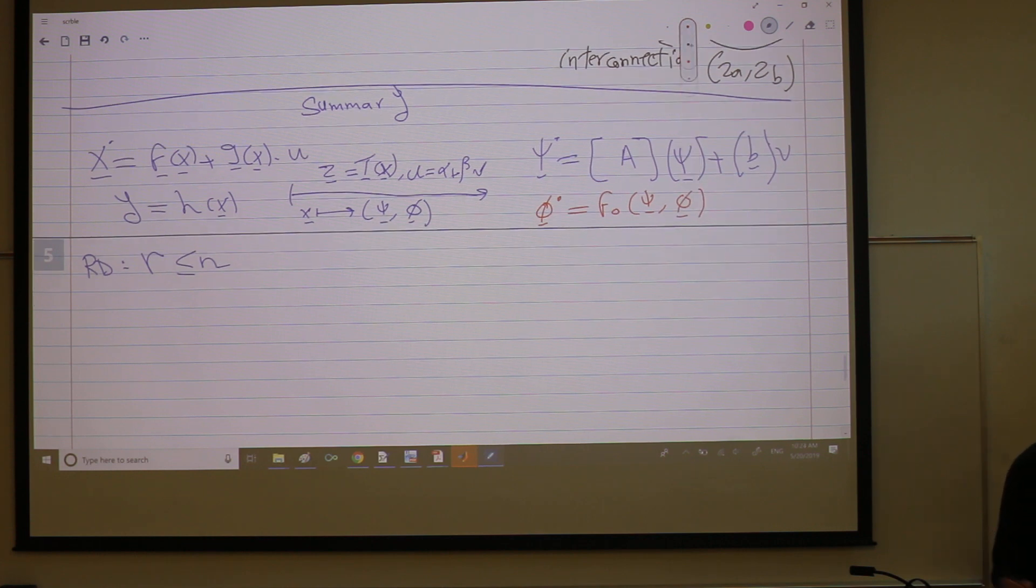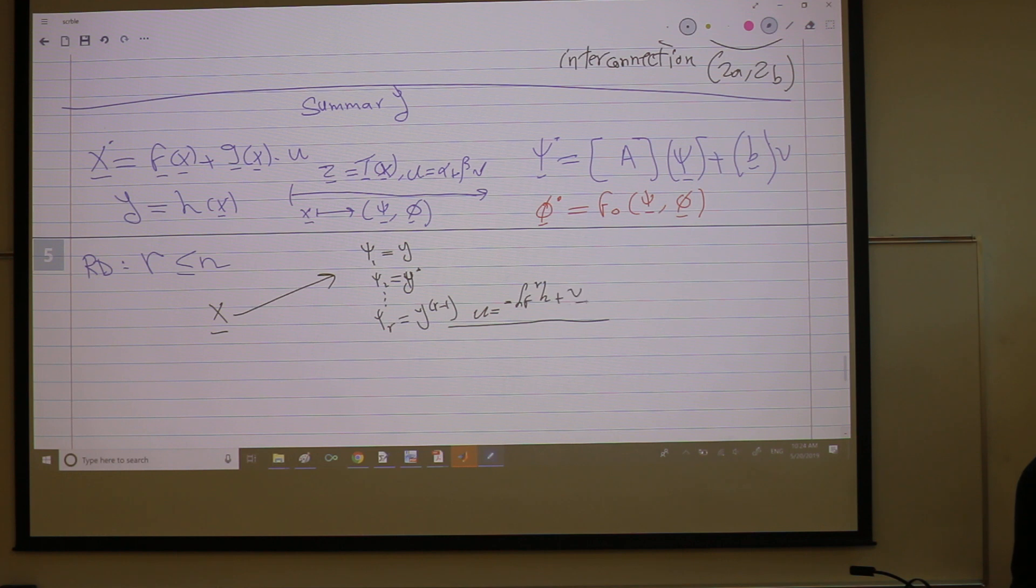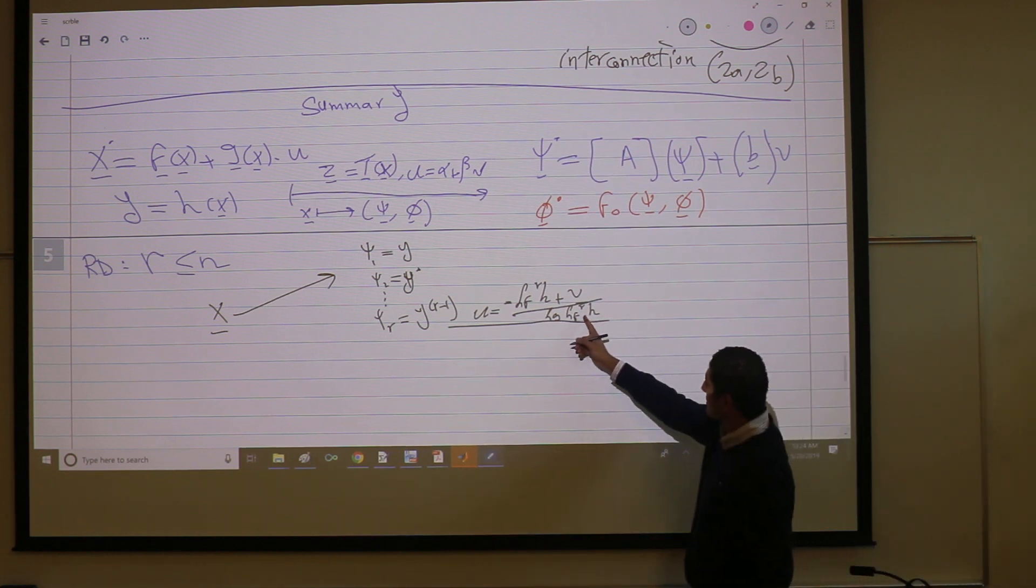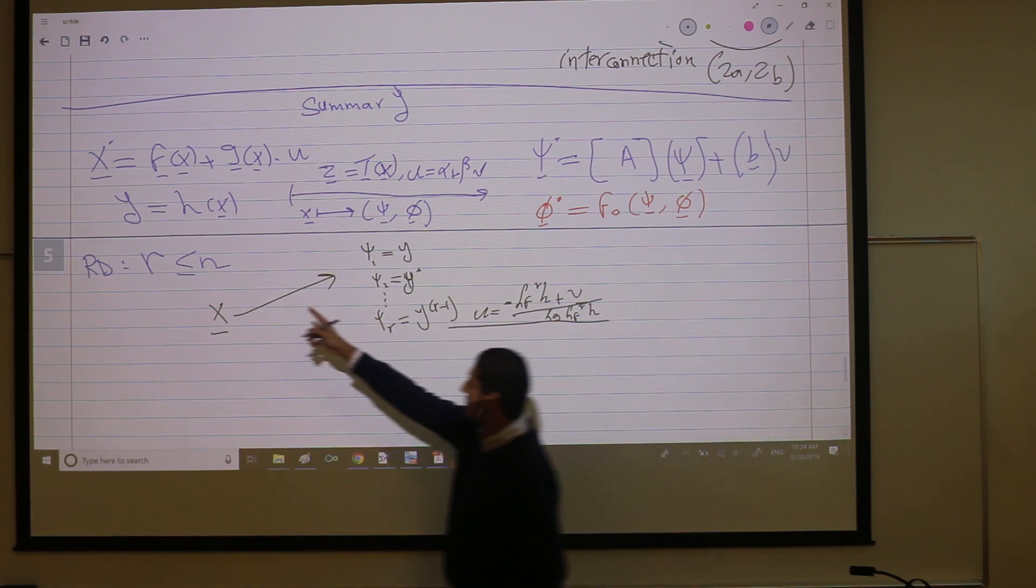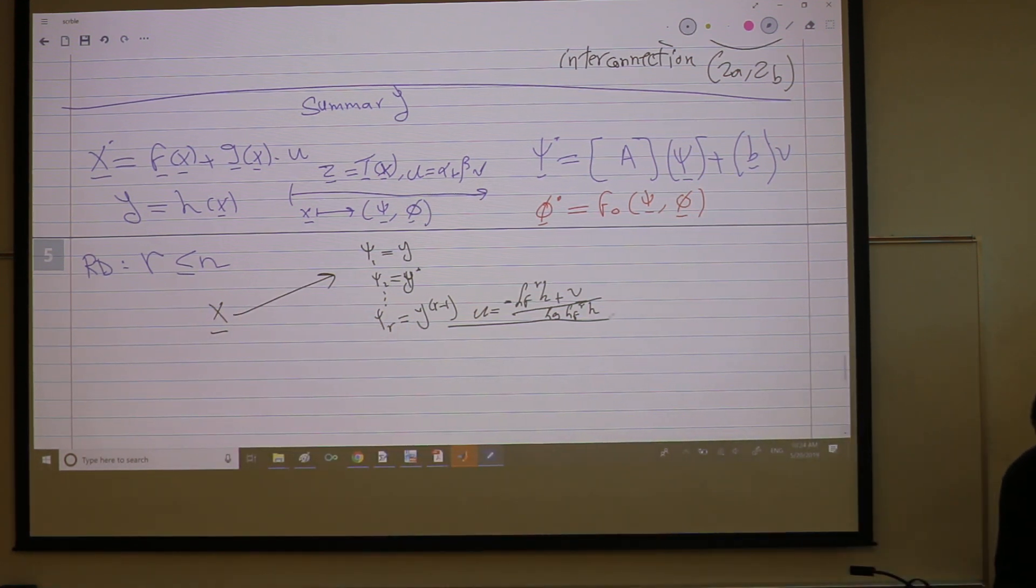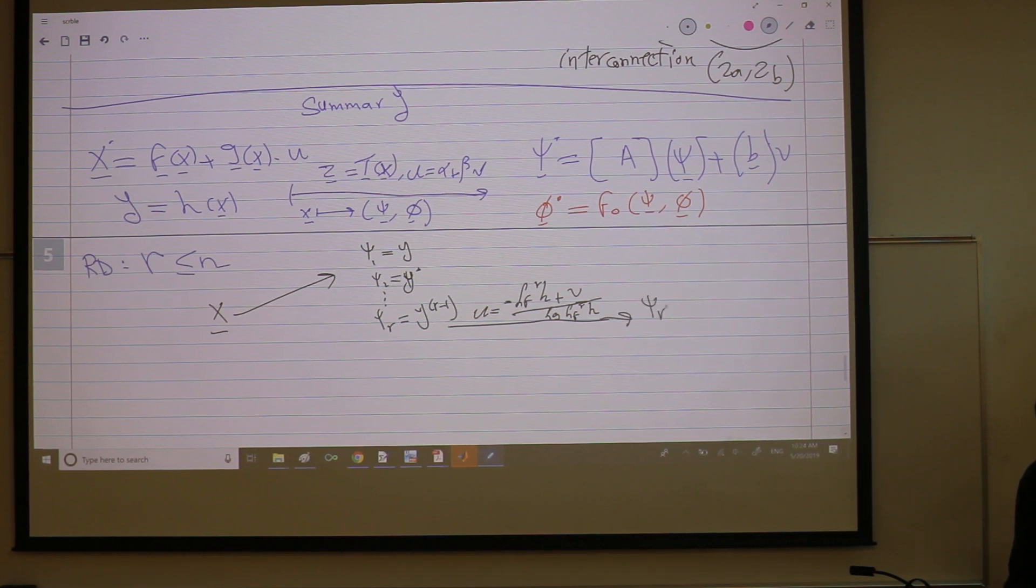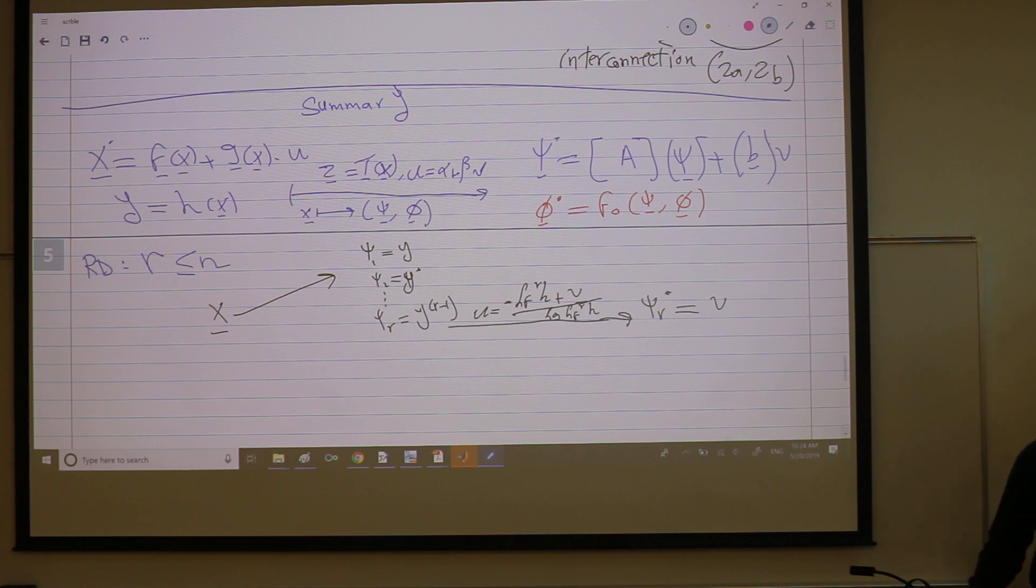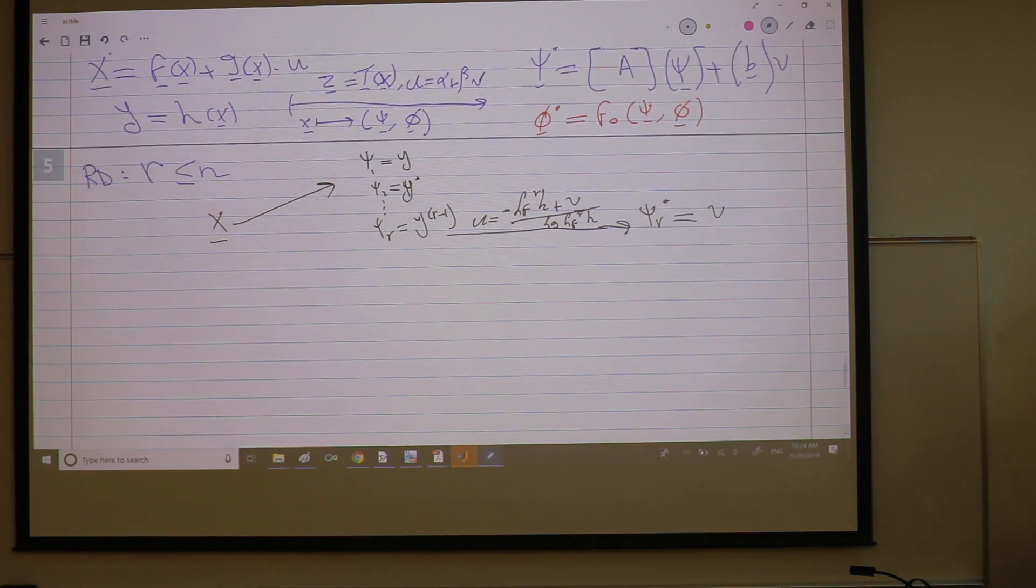How can you construct epsi's? That's very easy, so from x's, I construct epsi's by epsi1 is my y, epsi2 is my y dot, yada yada, epsi r is the r minus 1 derivative. So with the control law star, that u is negative lfrh plus v divided by LGLFRH and you're dividing by something you should ask yourself why it's not zero because this is the definition of a relative degree. So this control law in particular will ensure that this EPSAR R dot is just v. So I'm done with the EPSIs, what about the PHIs?